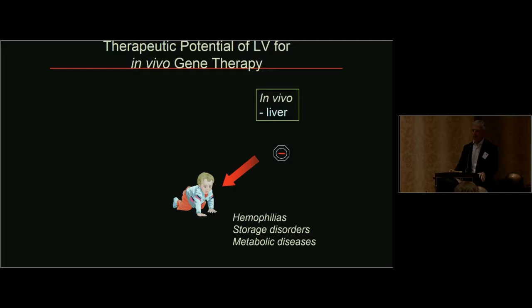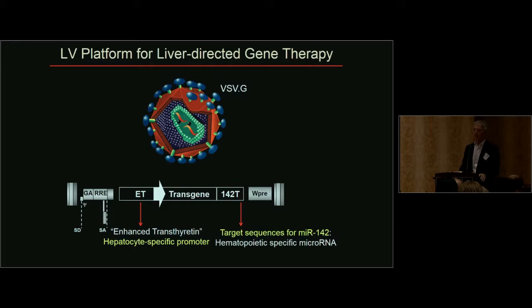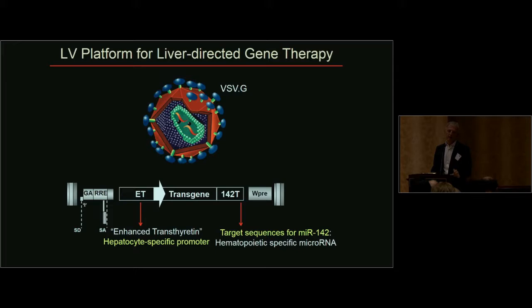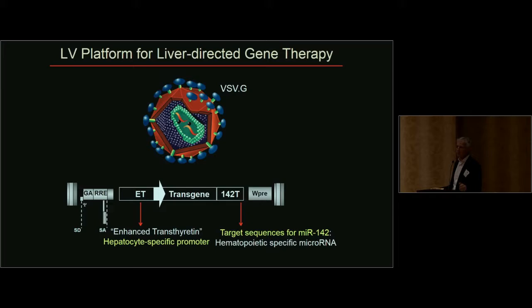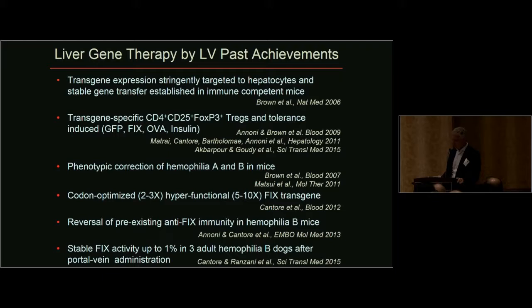In terms of how we can see this platform fitting direct in vivo delivery, the possibility of in vivo liver-directed gene therapy is the focus of my talk. We have been working on that for several years, designing a platform that uses both transcriptional and post-transcriptional regulation to sharply target expression of a transgene to hepatocytes. We have both a hepatocyte-specific promoter to drive expression mostly in hepatocytes, and also a target sequence for a microRNA that is selectively expressed in hematopoietic cells.